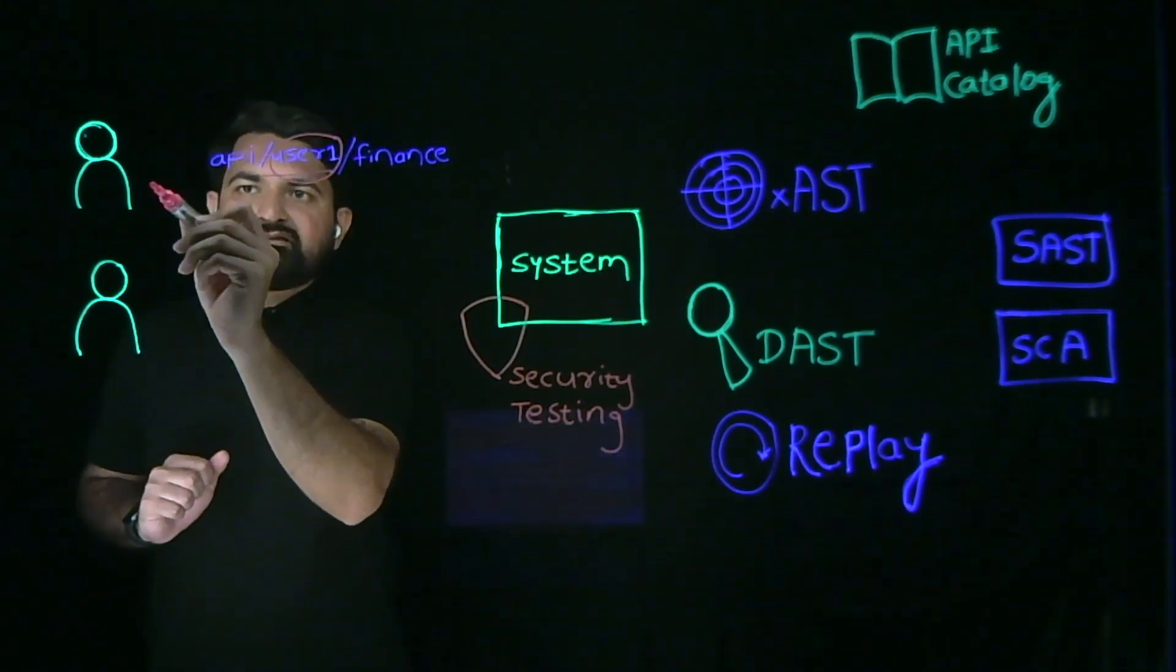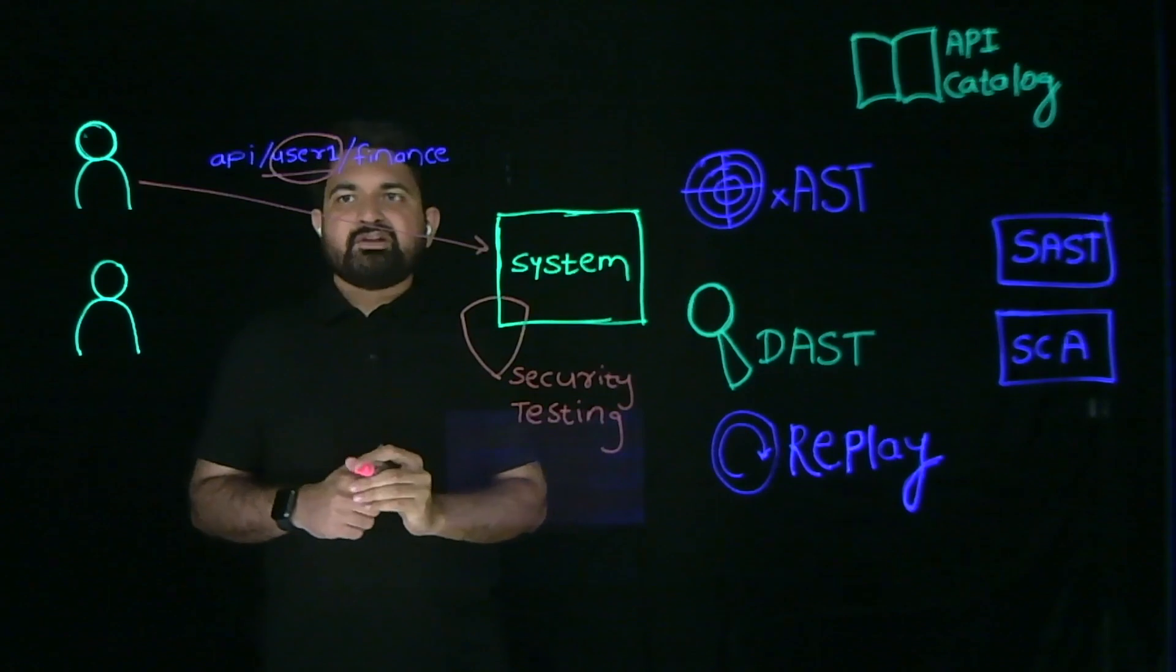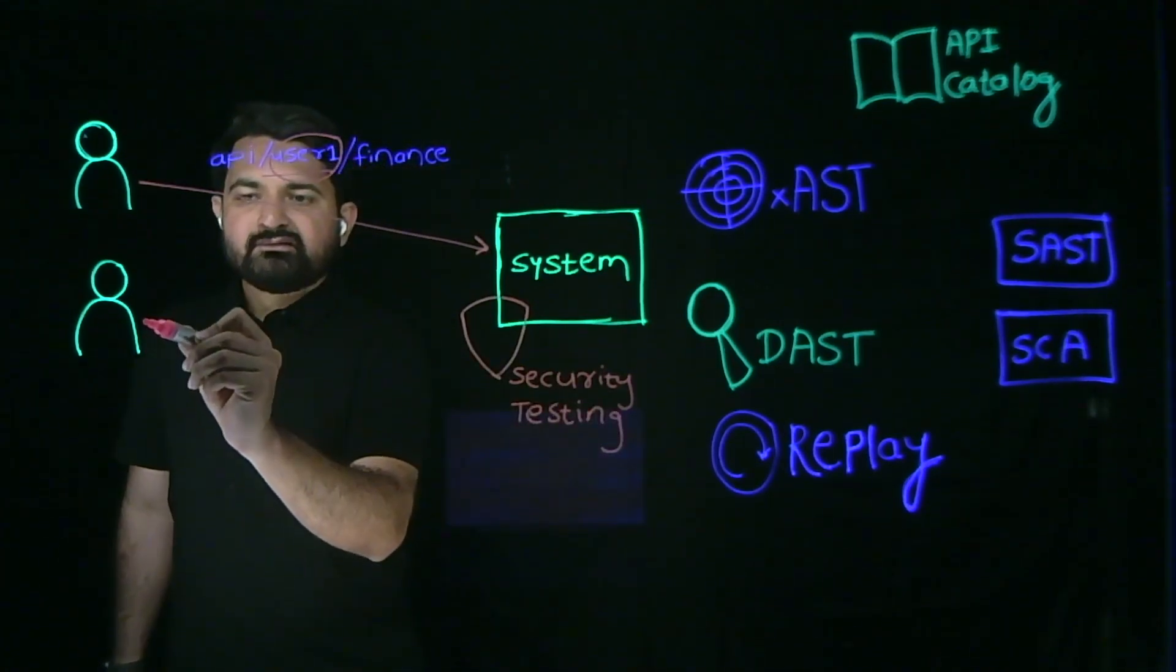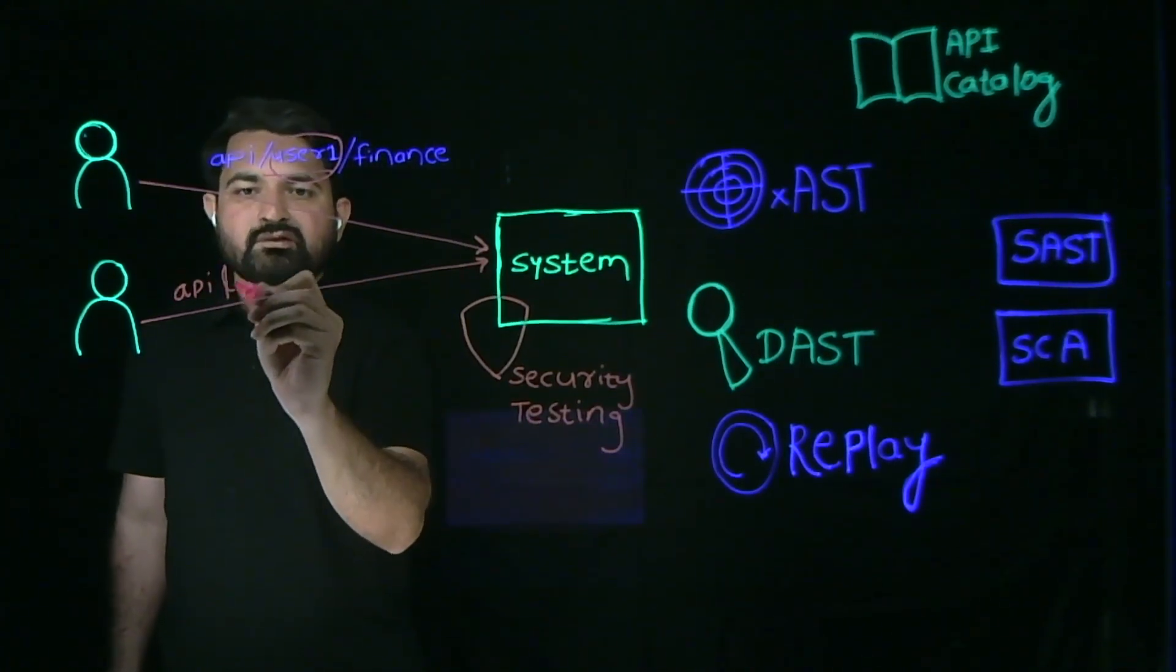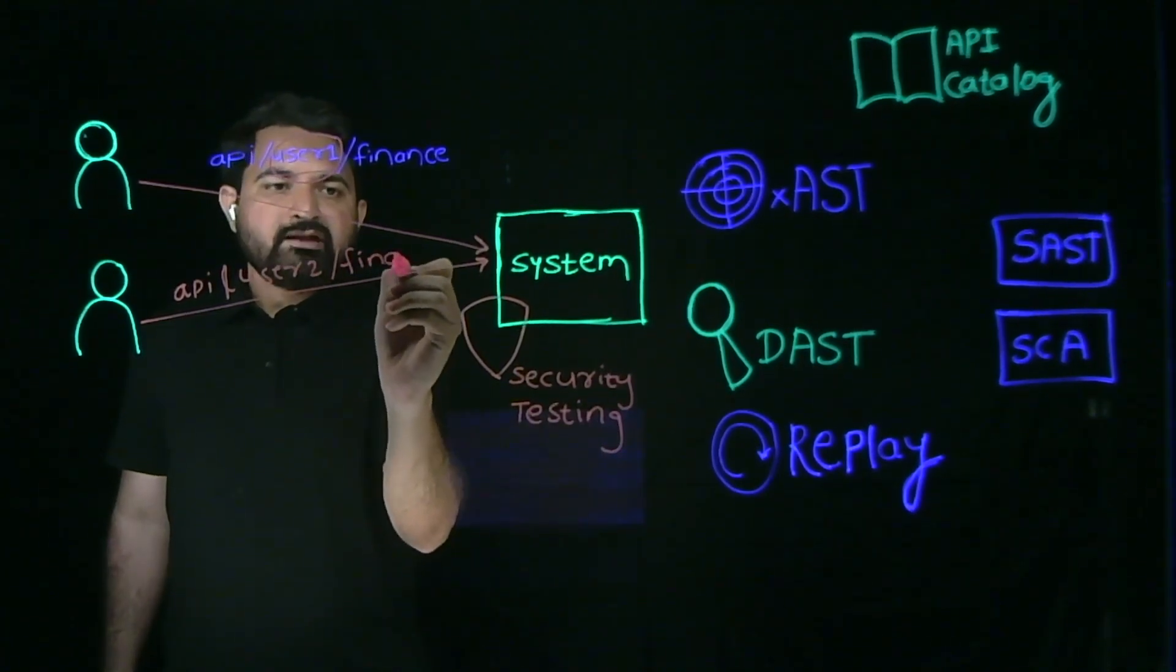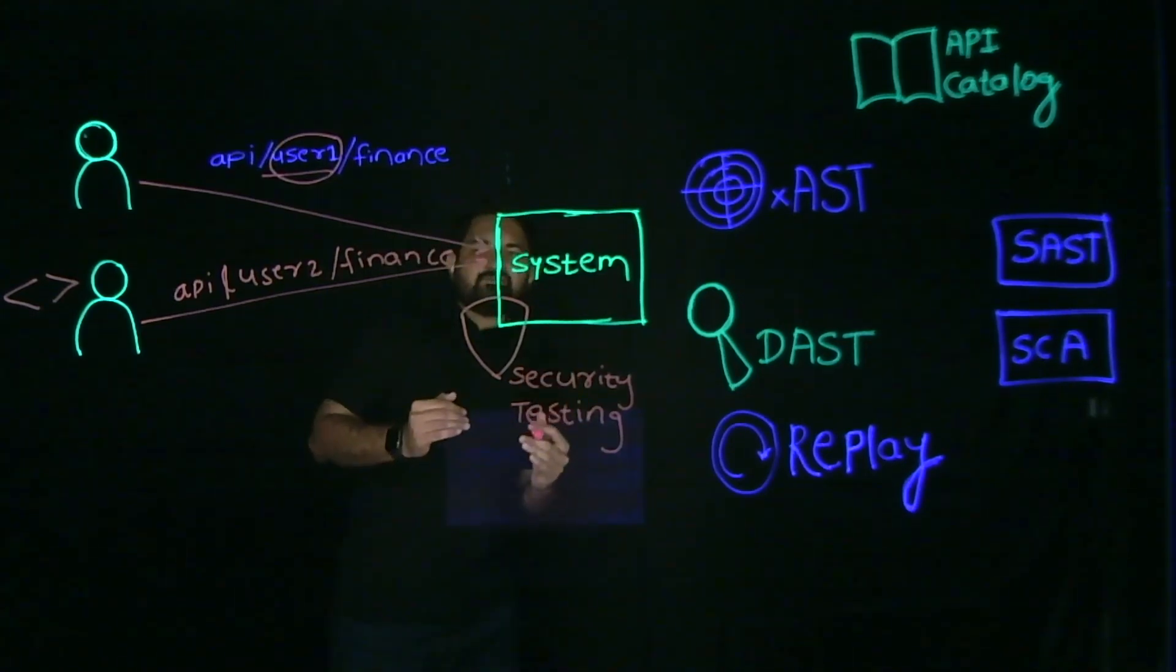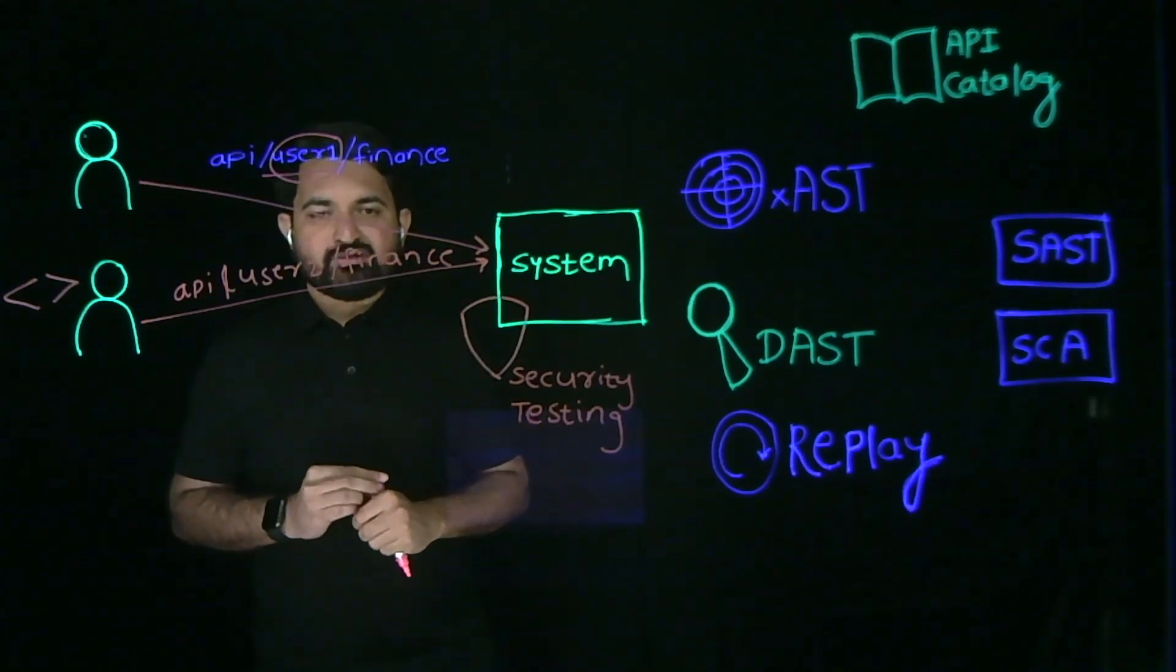If a genuine request looks like API slash user1 slash finance, where the user is accessing his own financial information, and an attacker tries to access the information for user2 and becomes successful, that's what we call a BOLA attack. An attacker can basically automate this and access the information of all of the users which are in this particular financial system.